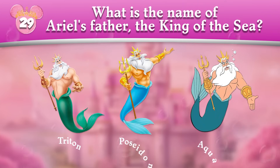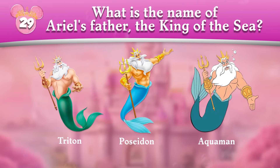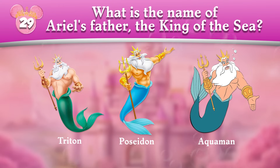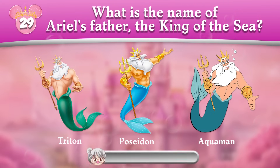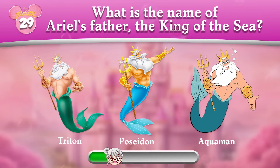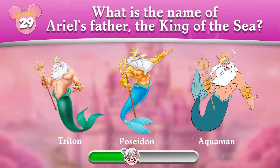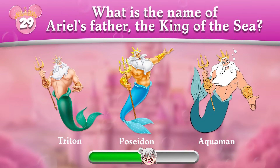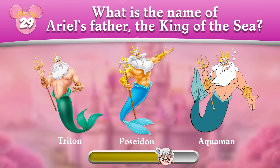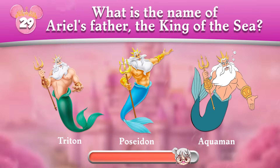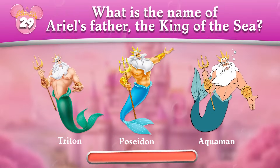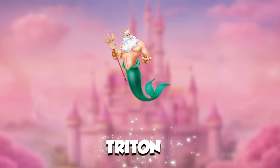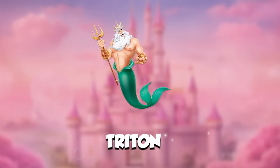Round 29: What is the name of Ariel's father, the king of the sea? Trident is the correct answer!